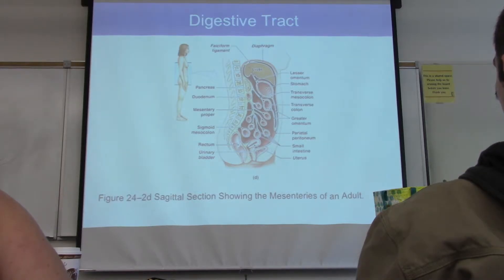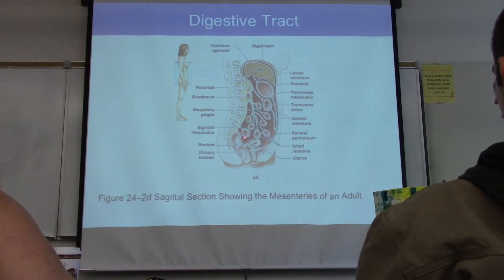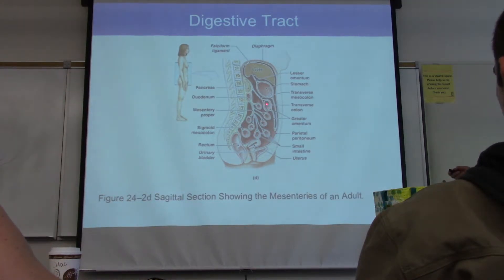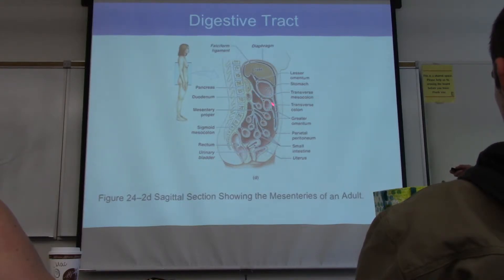Kind of looking at it from the side, it would look like this. Here's that mesentery coming up from the back, surrounding all these loops of bowel. Here's the sigmoid mesocolon. Here's that greater omentum that we were just talking about — it's sort of a mesentery, but sort of not. There's the transverse mesocolon, and this is the transverse colon.